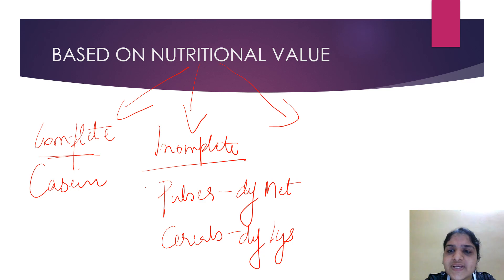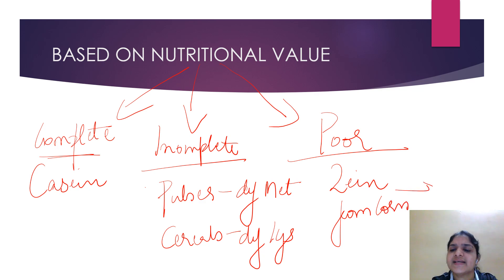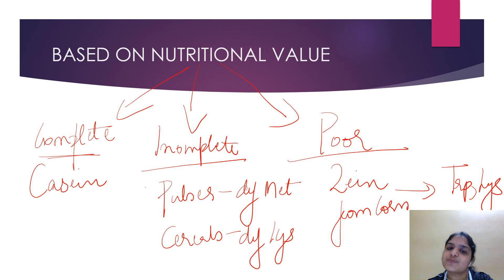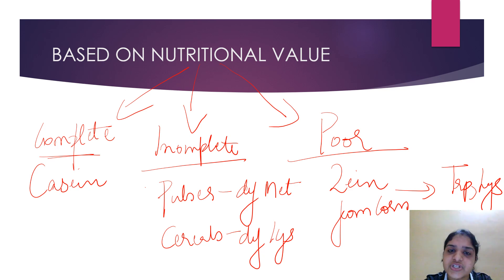Poor proteins, like zein from corn, lack many essential amino acids. Zein from corn lacks tryptophan as well as lysine. Incomplete proteins lack one essential amino acid, whereas complete proteins contain all essential amino acids in the required proportion.